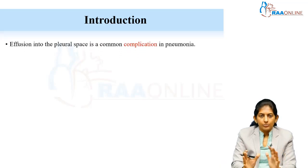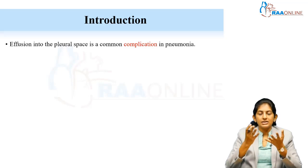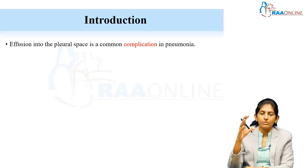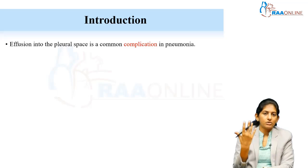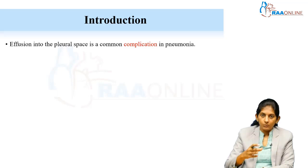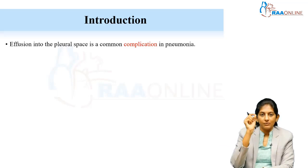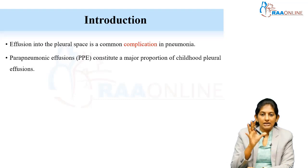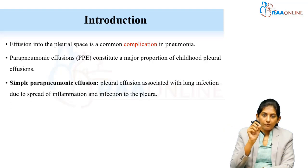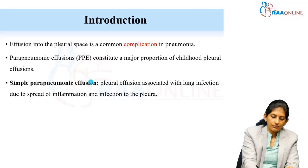Whenever there is a pneumonia in a child, we observe that there is some amount of minimal pleural effusion because of transudation, due to the inflammation going on in the parenchymal space. There is also some inflammation in the pleural space. Effusion in the pleural space is a very common complication of pneumonia, and these are parapneumonic effusions. A major proportion of childhood pleural effusions are PPEs.